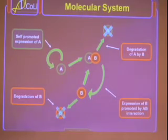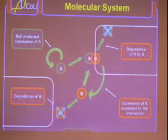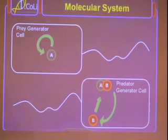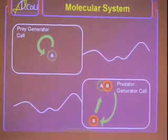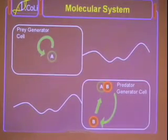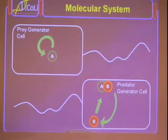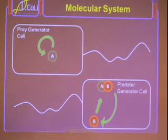Now the key to our system is we've taken this dynamic and split it up into two cells. So now we have the prey-generating machinery inside the prey-generator cell and the predator-generating machinery inside the predator-generator cell. So what this does is it means we can change the parameters by changing the population sizes of these two populations of bacteria. So we can change the output by altering cell ratios inside our system.